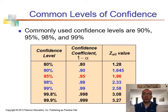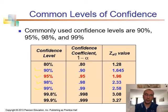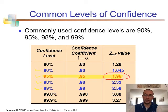The most commonly used confidence levels are 90 percent, 95 percent, 98 percent, and 99 percent. For this course, to keep things simple, we will use the 95 percent confidence level. What's important is that if you are using 95 percent confidence level, the associated z-value will be 1.96. You have to remember this number - for this course we are going to use 95 percent confidence level and the z-value will be 1.96.